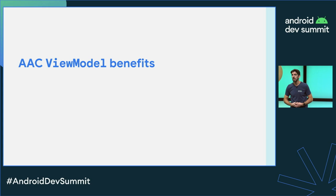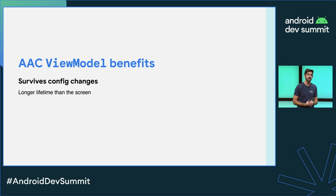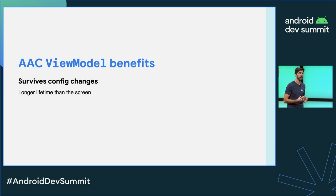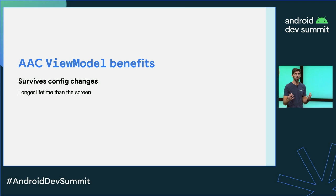But why are ViewModels the recommended implementation for screen-level state holders? Because of their benefits. ViewModels survive configuration changes, can be scoped to an activity, fragment, navigation graph, or a destination of a navigation graph, and they live longer than the screen itself. That's why it's a great place to hold our screen UI state — so it's instantly available after a configuration change — and to trigger business logic requests so those requests can also survive a configuration change.